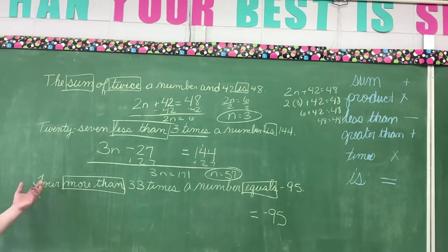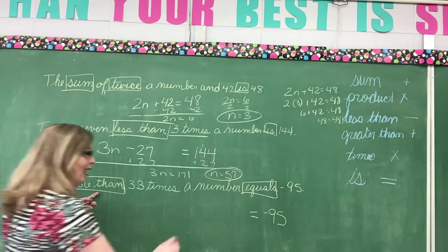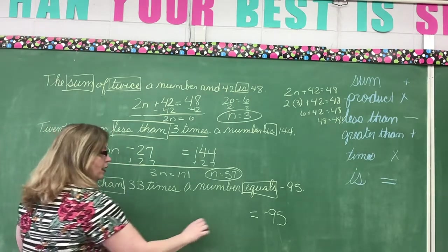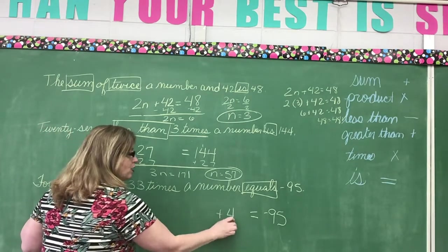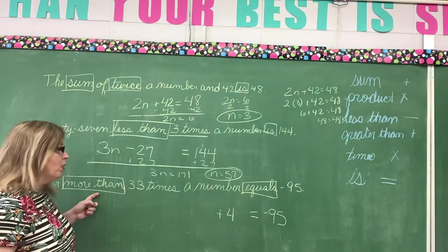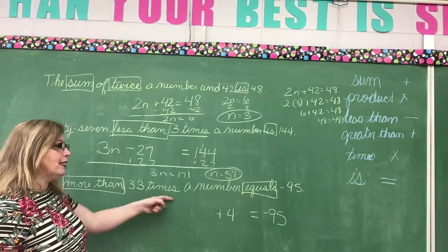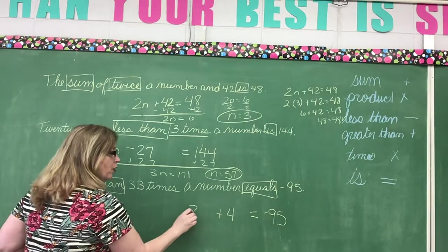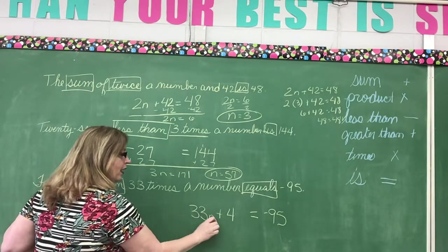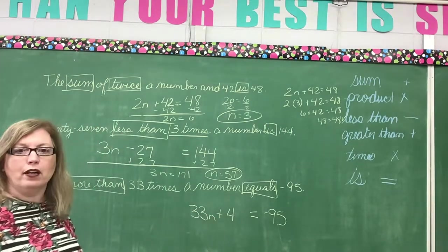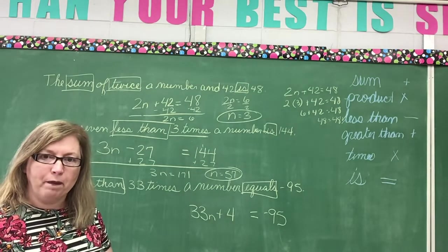Okay. So go back to the front of this. 4 more than. So we're going to add 4 to something. Now it does say than. Okay. So that means our 4 is going to come after. What are we going to put? 33 times a number or 33n. There's your equation. And you would now simply solve it.